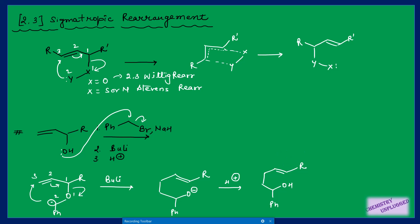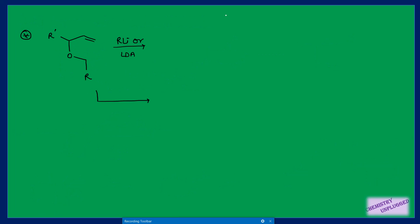One very important point: there is preferential formation of E-alkene in [2,3]-Wittig rearrangement. In most cases we get E-alkene. We will take one more example to explain why E-alkene forms preferentially and why we do not get Z-alkene in major amount. An organolithium compound, LDA, or any other strong base removes the proton to generate the carbanion.